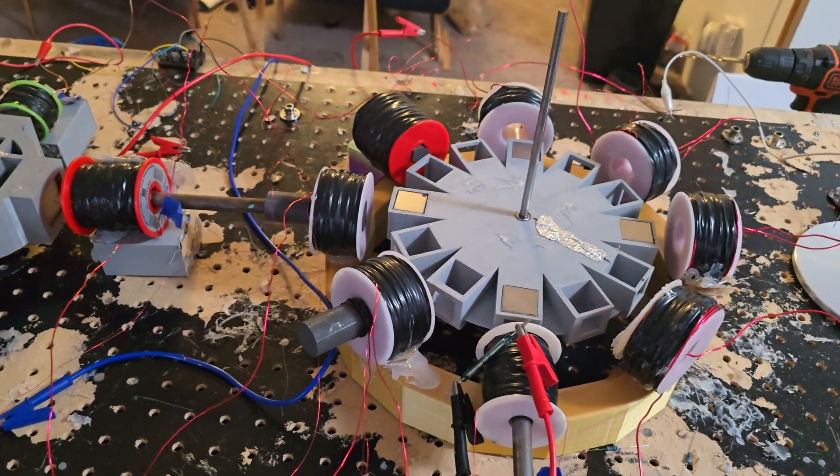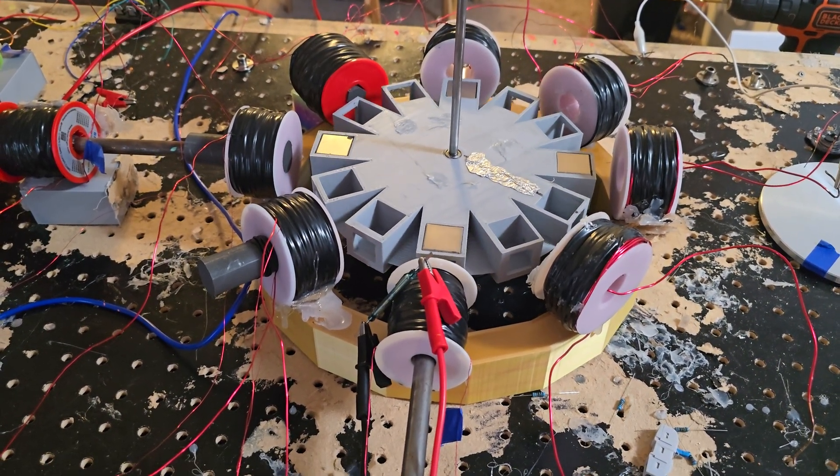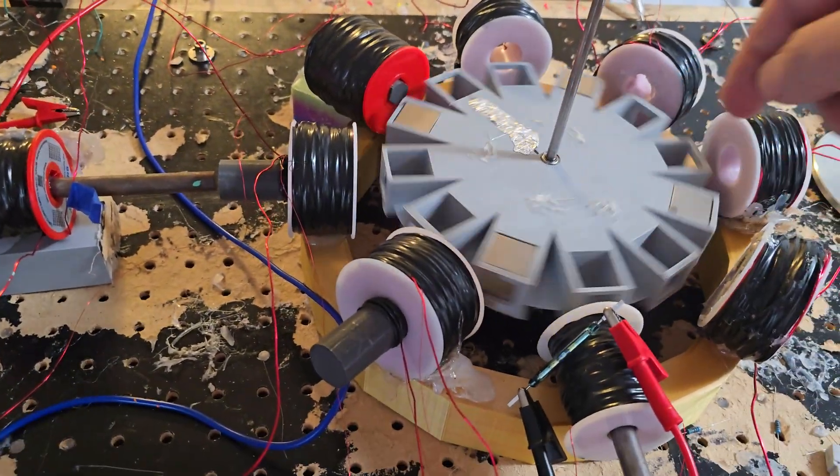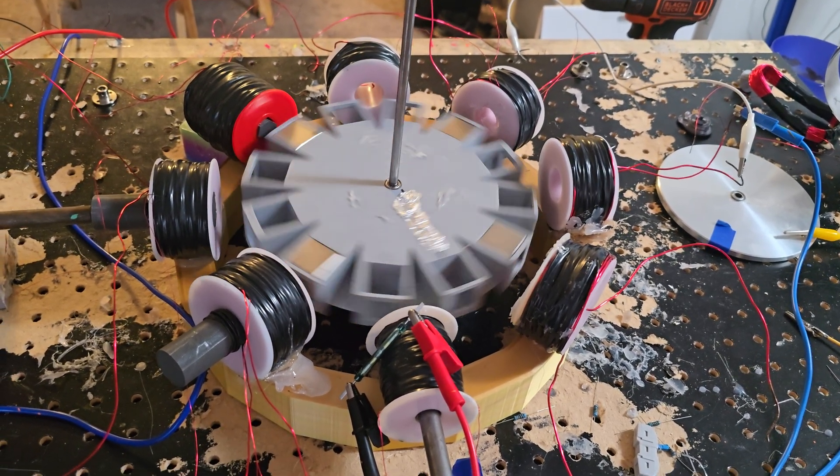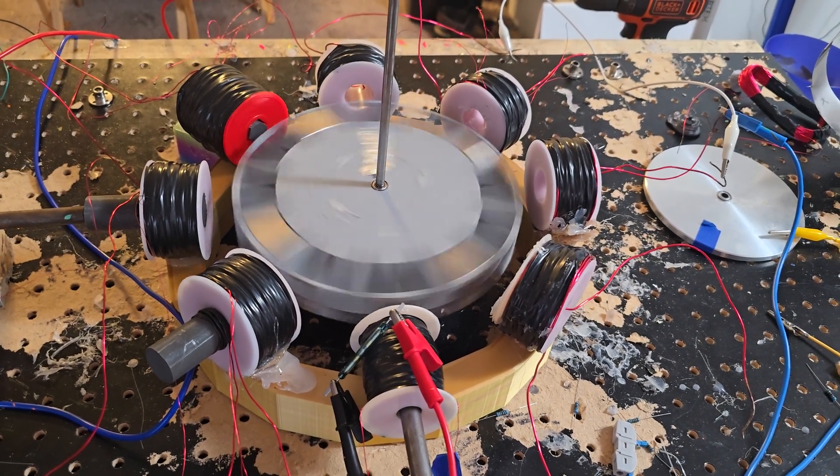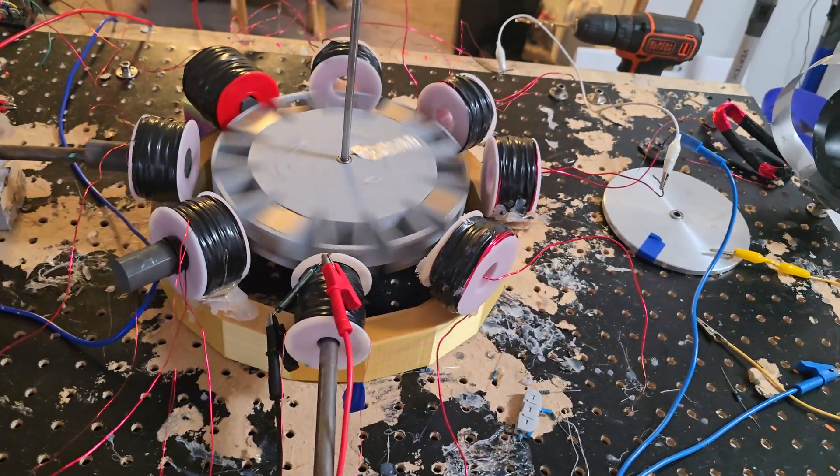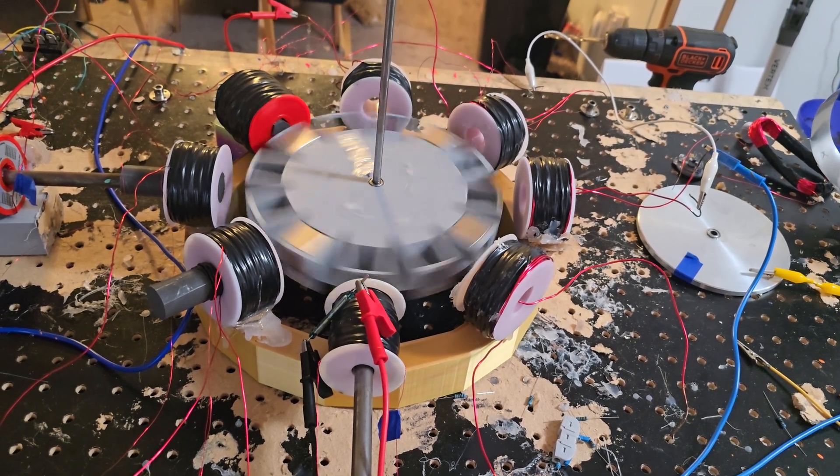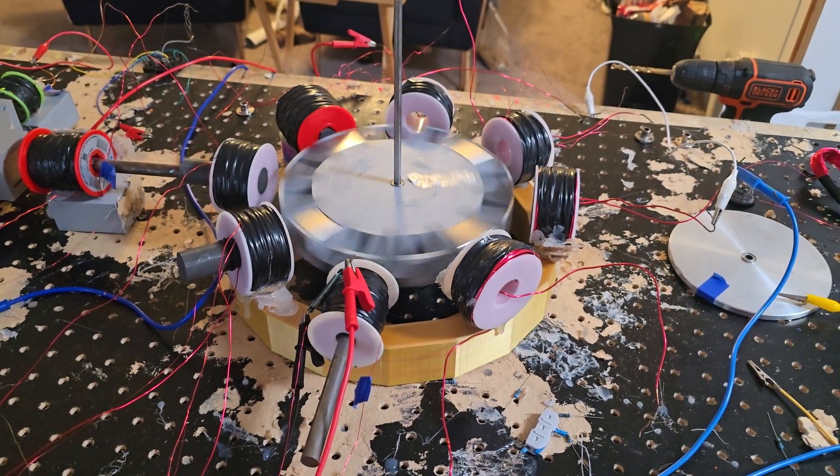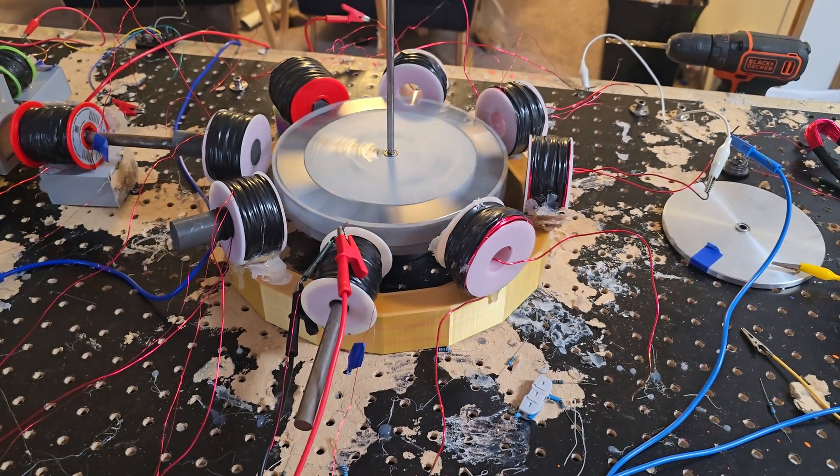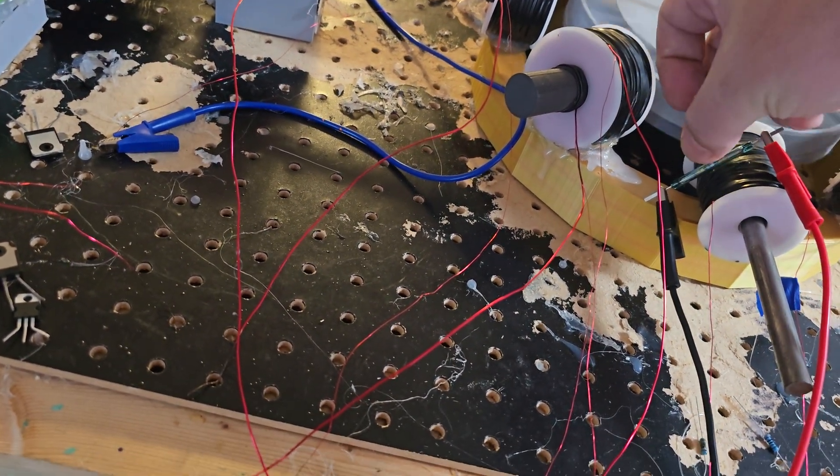All right, we're back ladies and gentlemen. I flipped the polarity and I put another magnet in, let's see what happens now. Now all these tests are just being done with this one coil right here. It's about 2,000 turns of 26 gauge.